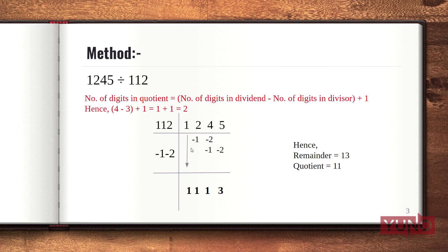Now 2 minus 1 is 1. This 1 is again multiplied with the transposed divisor digits and the answers are written in the next columns. So 1 multiplied with minus 1 is minus 1, written below 4. Then 1 multiplied with minus 2 is minus 2, written below 5. This step stops here since we have reached the rightmost digit. Computing the column sums: 4 minus 2 minus 3 is 1, and 5 minus 2 is 3.